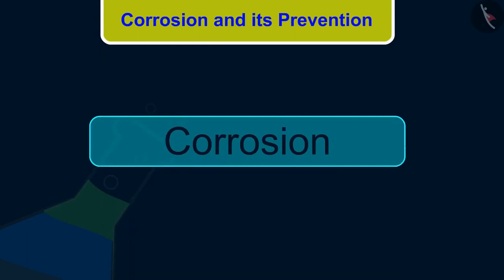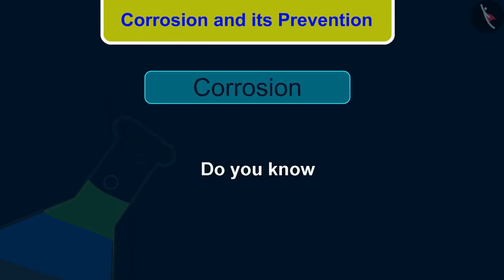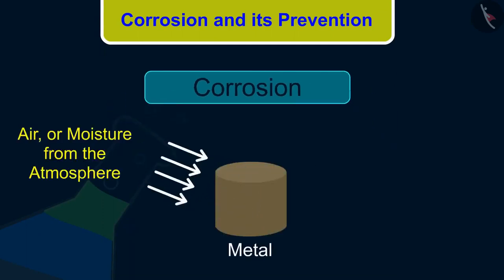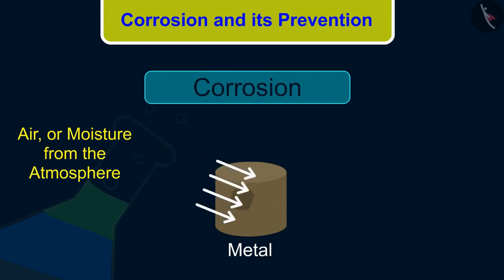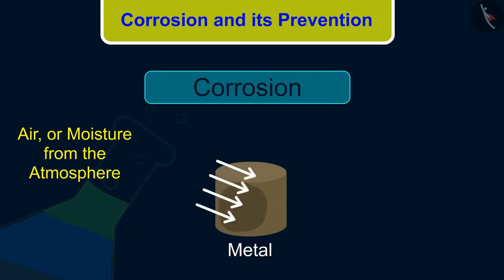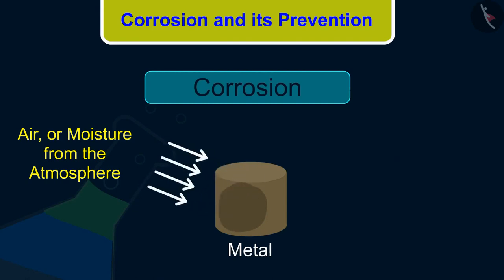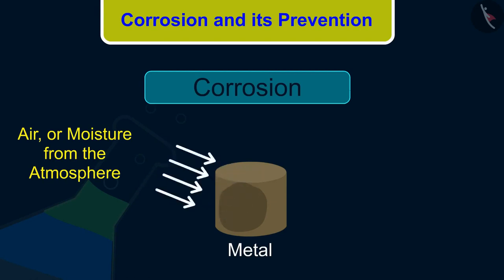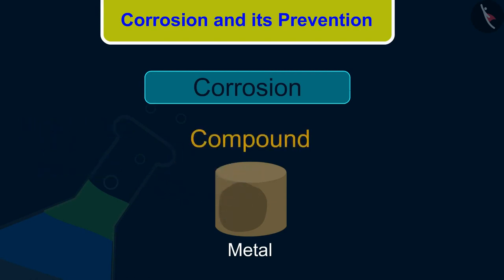Do you know that if a metal is reactive, its surface may be slowly attacked by the air or moisture from the atmosphere? The metals react with oxygen present in air and form a compound on its surface.